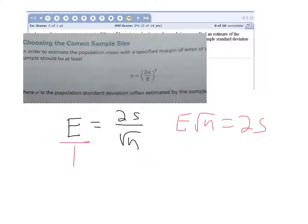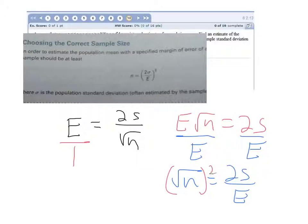And then, of course, I'm looking for n, so I'm going to divide both sides of this equation by the margin of error. And that's going to be the square root of n equals 2 times s over the error. And then to get rid of the square root, we're going to square both sides.